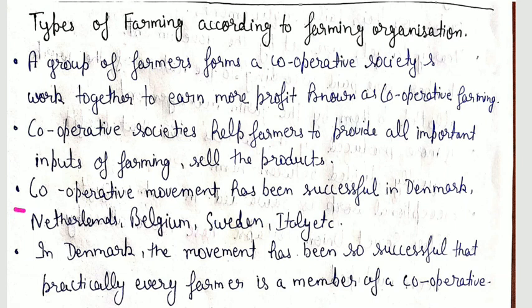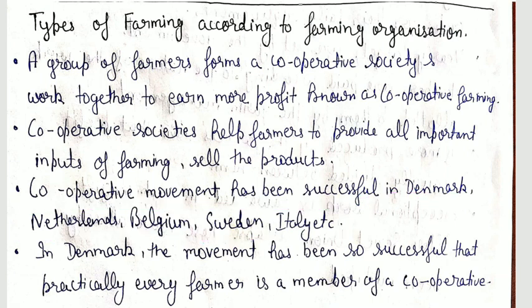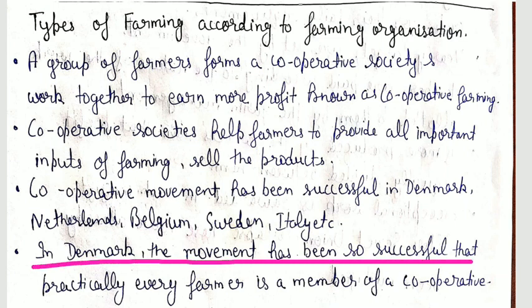The cooperative movement has been successful in Denmark, Netherlands, Belgium, Sweden, and Italy. In Denmark, the movement has been so successful that practically every farmer is a member of cooperative farming.